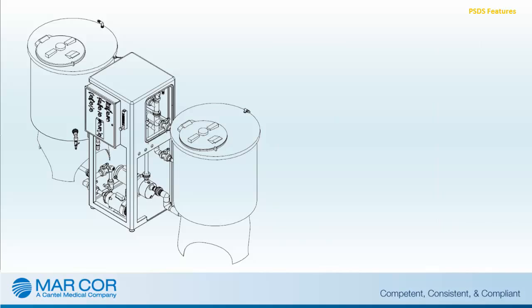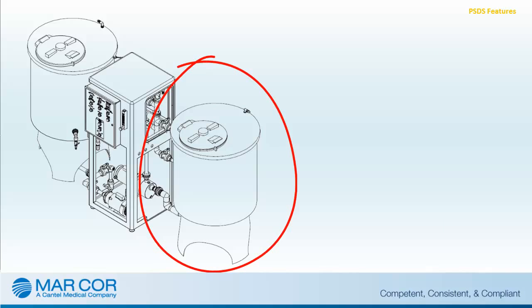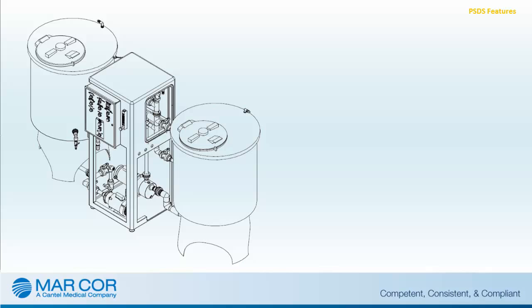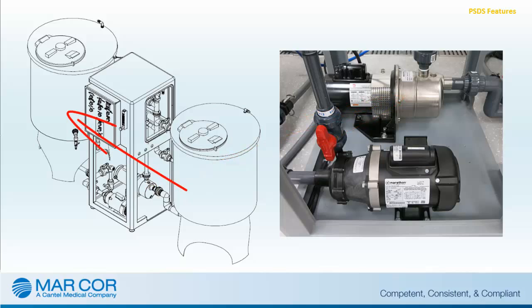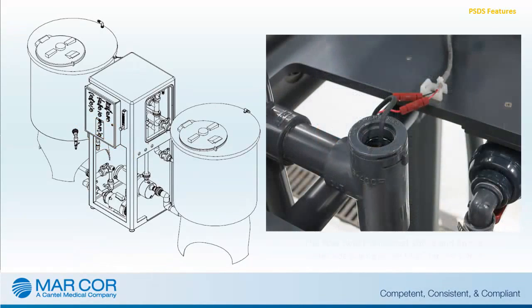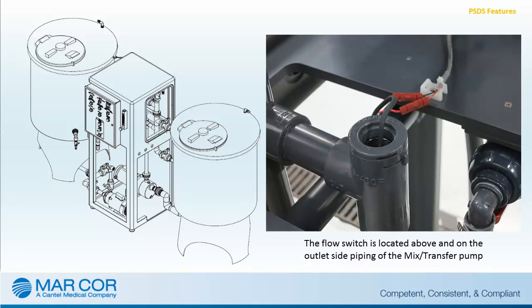The solution distribution system is provided with a 100-gallon mix tank used for mixing the bicarb powder into solution. This pump also transfers solution from the mix tank to the distribution tank. A flow switch is located on the outside of the mix pump to prevent damage to the pump. The flow switch will automatically turn the mix pump off during insufficient flow conditions.